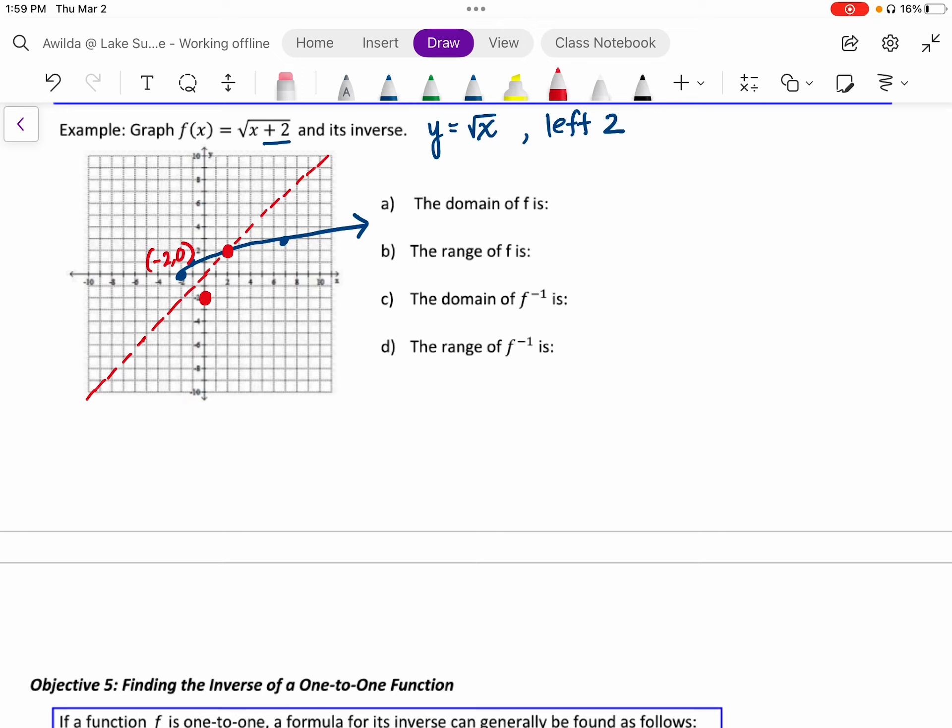Finally, let's look at the ordered pair. That is going to be reflected to the point. And so the graph of the inverse is going to be right here in red.